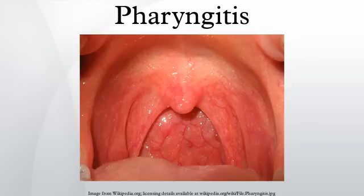Diphtheria is a potentially life-threatening upper respiratory infection caused by Corynebacterium diphtheriae, which has been largely eradicated in developed nations since the introduction of childhood vaccination programs, but is still reported in the Third World and increasingly in some areas of Eastern Europe. Antibiotics are effective in the early stages, but recovery is generally slow.